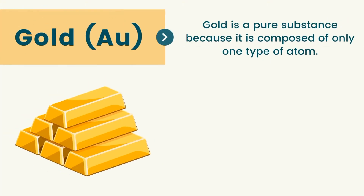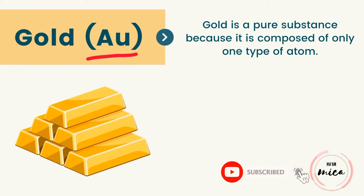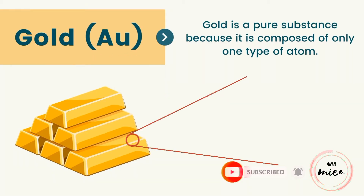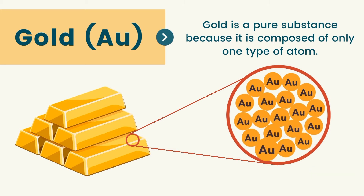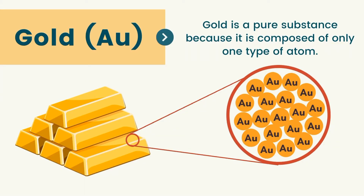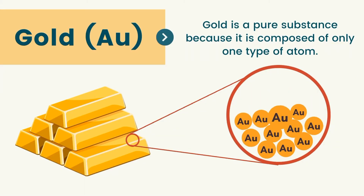Let us look at the elements. I have here gold, and the element symbol for gold is Au. If we are going to zoom in on what makes pure gold, you can see that all of the atoms have the same type — those are the gold atoms. Therefore, gold is a pure substance because it is composed of only one type of atom.